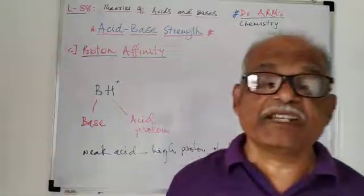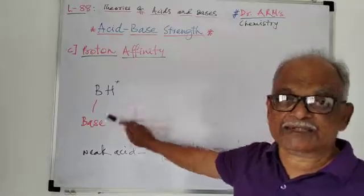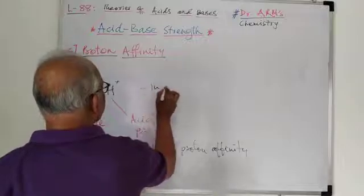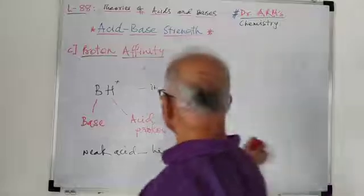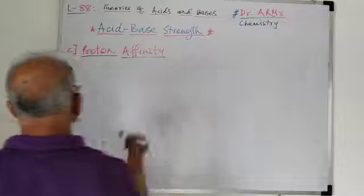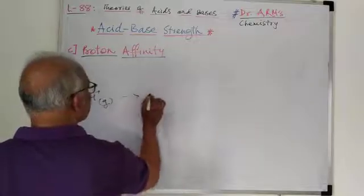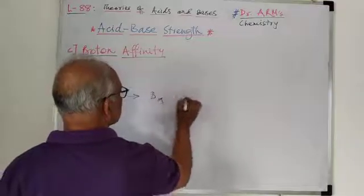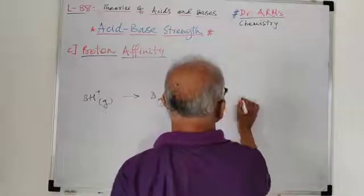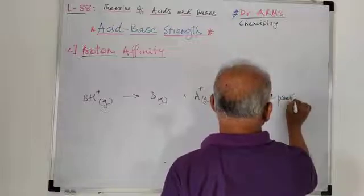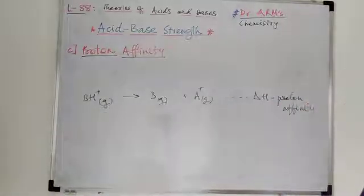This proton affinity can be measured in its purest form using gas phase reactions — it can be better measured in gas phase. For example, if we show BH+ in gaseous state, it is converted into B (base) in gaseous state plus H+ also in gaseous state. In this case, the change in enthalpy, that is delta H, is the proton affinity.